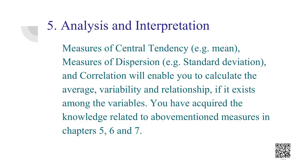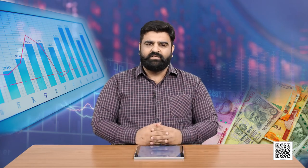Then the next step is analysis and interpretation of data. We can use various statistical tools like measures of central tendency such as mean, median, mode, or measures of dispersion like standard deviation, mean deviation, range, and we can also find the correlation coefficient between two variables. We can then conclude whether there exists a relationship among variables or not. The next step is the conclusion.